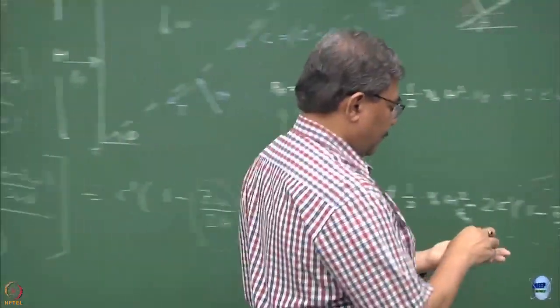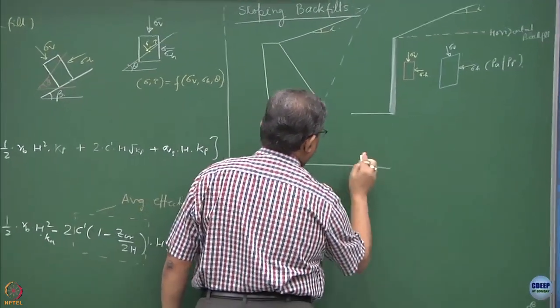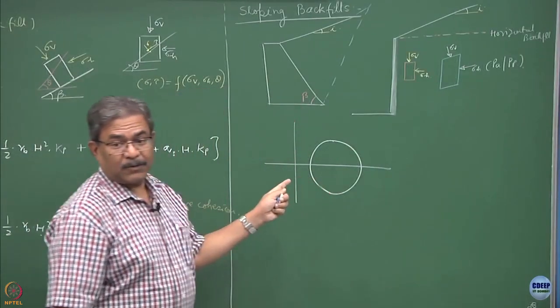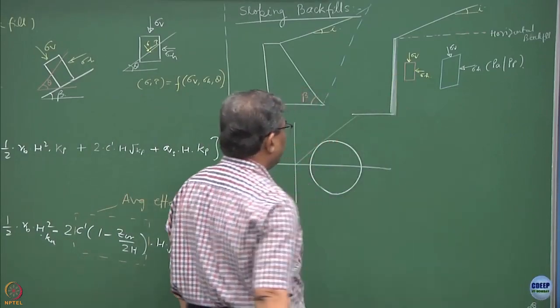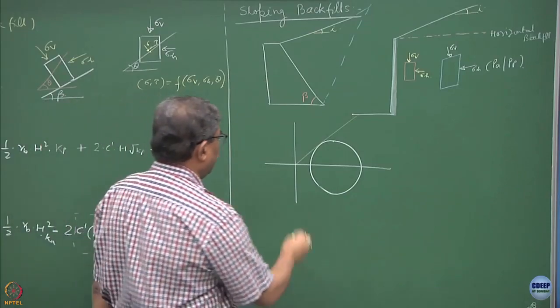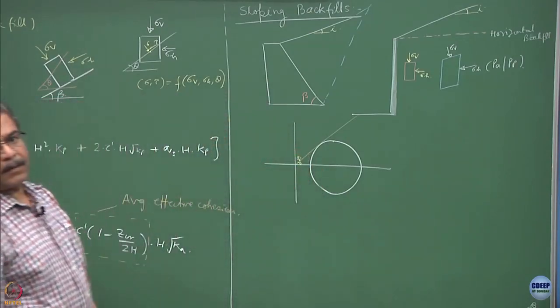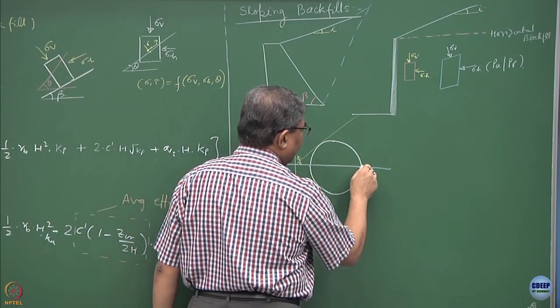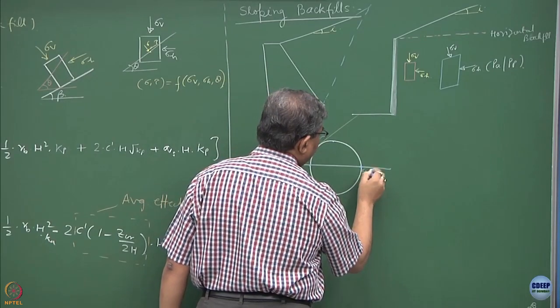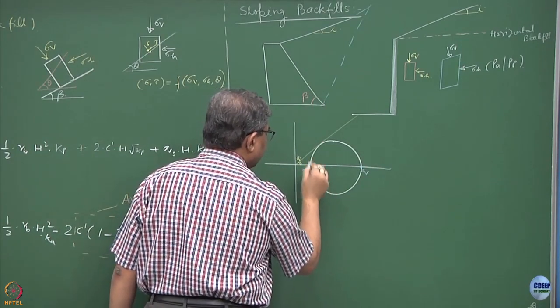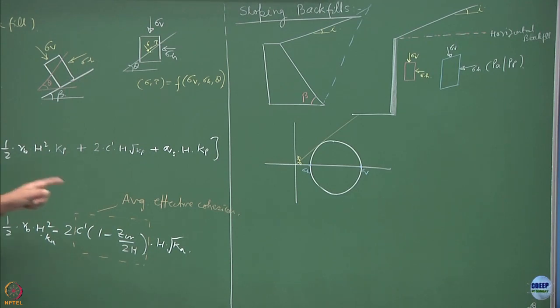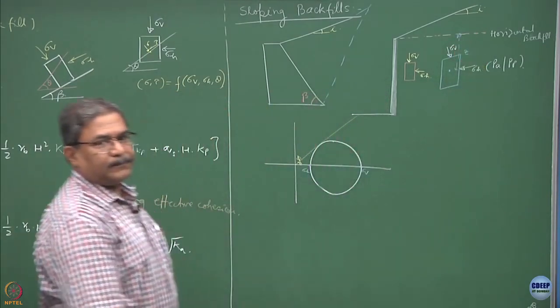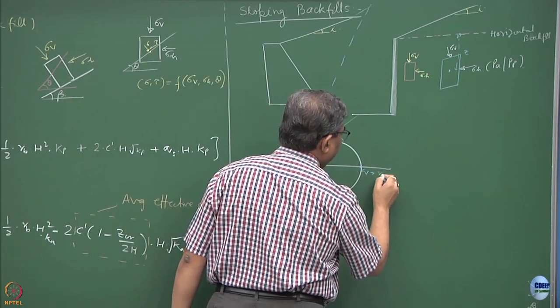So, draw the Mohr circle. This is the Mohr circle for frictional material, so this becomes the failure envelope phi angle. What is the state of sigma 1, sigma 3? This is sigma 3, this is sigma 1. That means this is sigma v and this is sigma h and sigma v is if this is the depth of a point from the horizontal backfill at a depth of z, so this was equal to gamma into z.